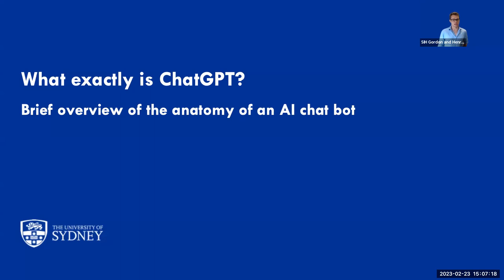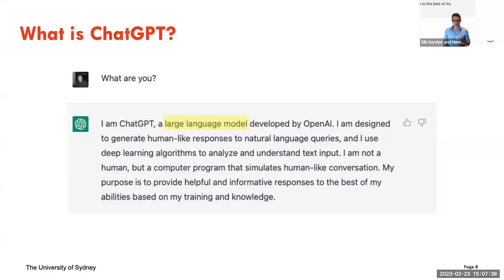So what exactly is ChatGPT? It's important to spend a little time on the basics of what exactly this is, how we got here, and what it isn't. ChatGPT is a large language model developed by a private company called OpenAI, which is not publicly traded. It's built to generate human-like responses based on natural language queries.